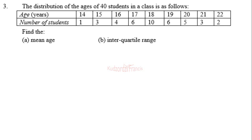Age in years: 14, 15, 16, 17, 18, 19, 20, 21, 22. Number of students: 1, 3, 4, 6, 10, 6, 5, 3, 2. Find the mean age.